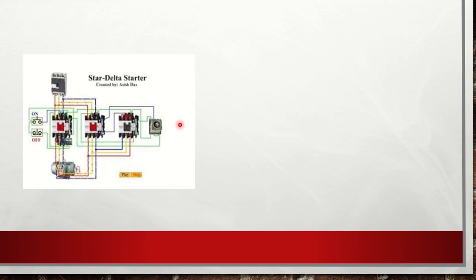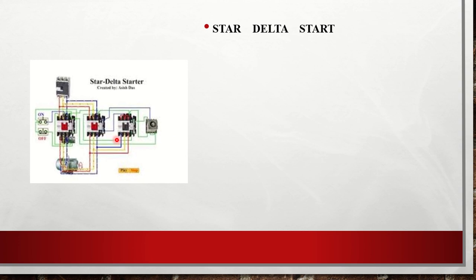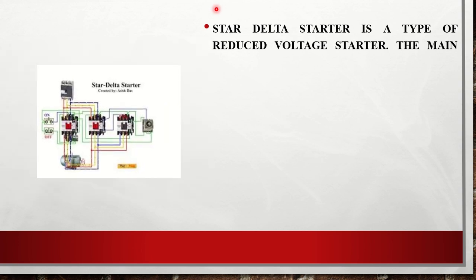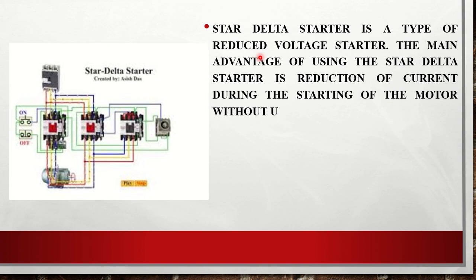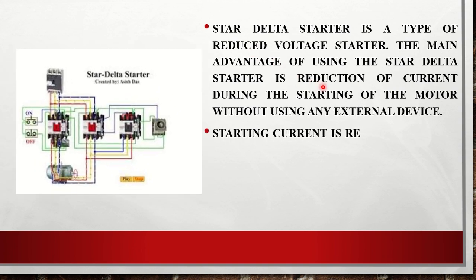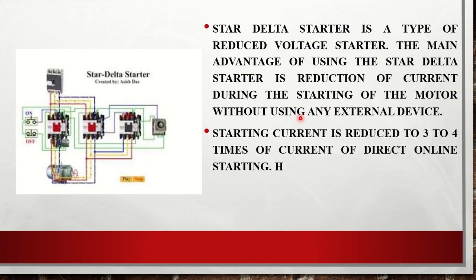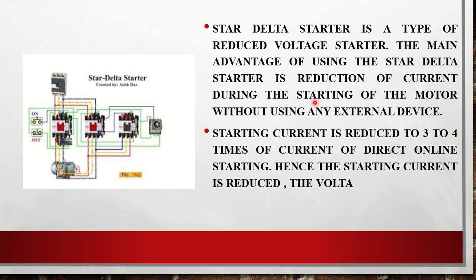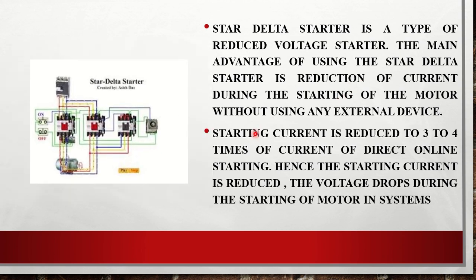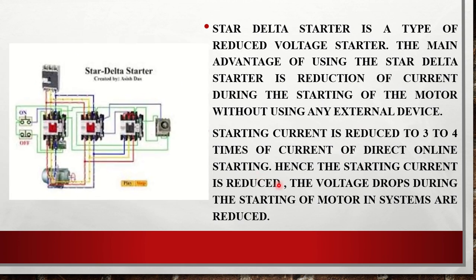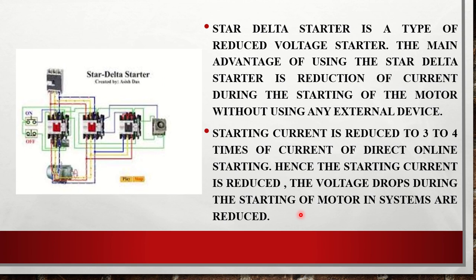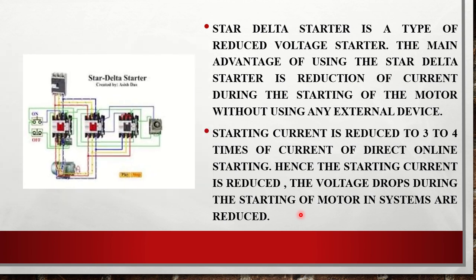The answer is: a star-delta starter is a type of reduced voltage starter. The main advantage of using the star-delta starter is reduction of current during the starting of the motor without using any external device — it reduces the starting current of the motor. Starting current is reduced to 3 to 4 times compared to direct online starting. Hence the starting current is reduced, and the voltage drop during motor starting in the system is also reduced. This is why we use a star-delta starter with any induction motor rather than a DOL starter.